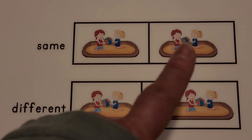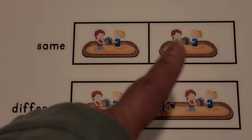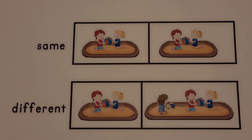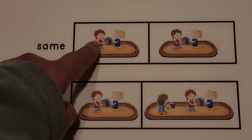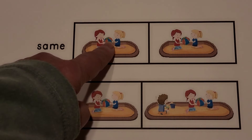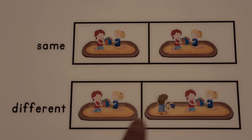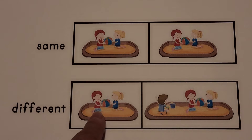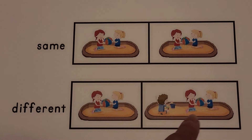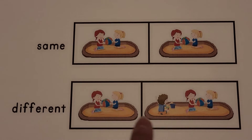These two pictures are the same — they have two children and a ball. These pictures are different. Here are two children and a ball, and here are three children and a ball and a sand bucket. These pictures are different.